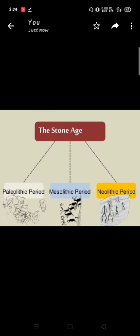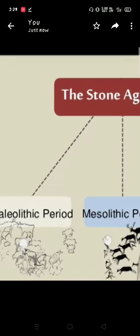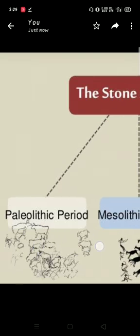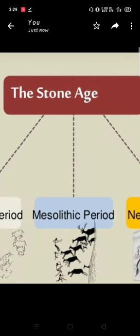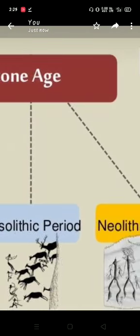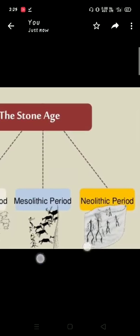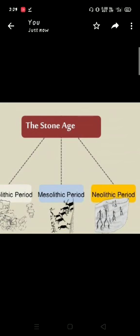We can broadly divide the Stone Age, or early human life, into three. The first one is the Paleolithic Age, the second one is the Mesolithic Age, and the third one is the Neolithic Age.